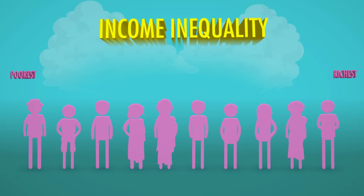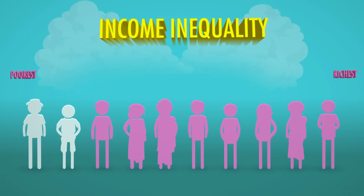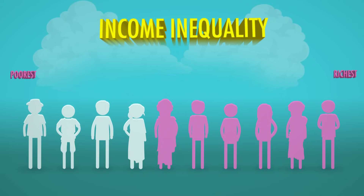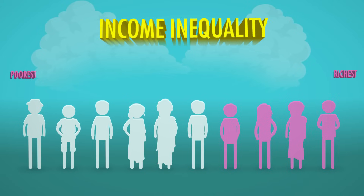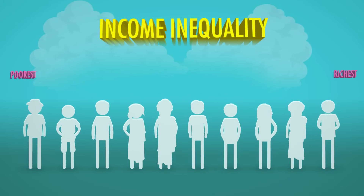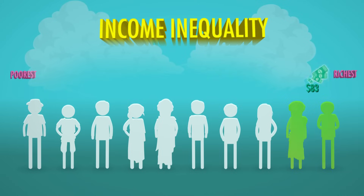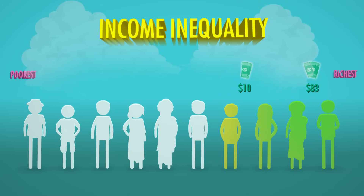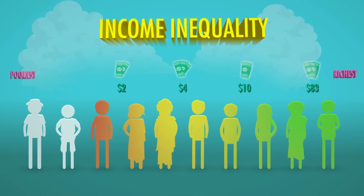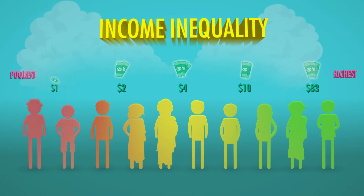We're teaching economics, so let's focus on income inequality. These 10 people represent everyone on the planet, lined up according to income — poorest over here and richest over here. This group represents the poorest 20%, the second poorest 20%, the middle 20%, and so on. If we distributed $100 based on current income trends, the richest group would get about $83. The next richest group would get $10, the middle gets $4, the second poorest group gets $2, and the poorest 20% of humans would get $1.